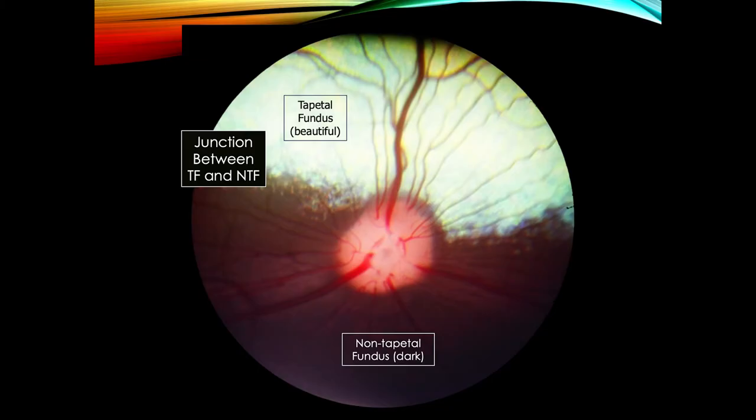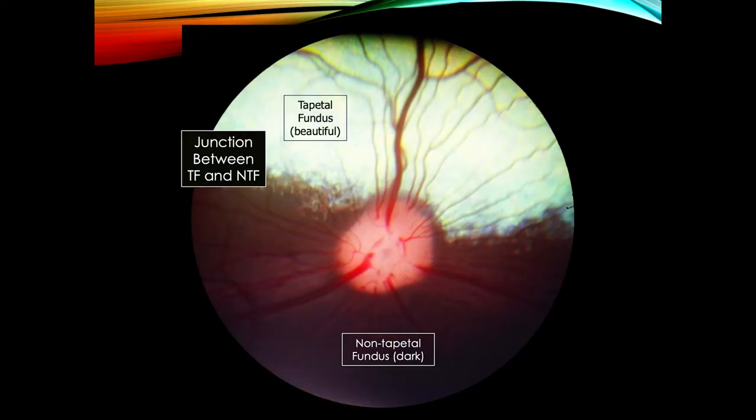If you can see the tapetum, what must that tell you about the structures that sit on top of it? Those structures must be transparent. How much pigment therefore is in the retinal pigment epithelium over the tapetal area? No pigment — perfect. This dark area — how much pigment is present in the RPE? A lot. Melanin is the pigment.